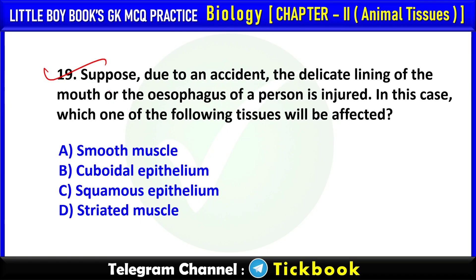Q19. Suppose due to an accident, the delicate lining of the mouth or the esophagus of a person is injured. In this case, which one of the following tissues will be affected? Option number C: Squamous epithelium.